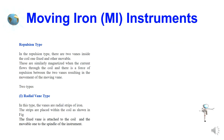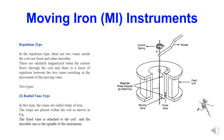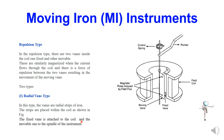Now moving to the repulsion type moving iron instruments. In repulsion type, there are two vanes inside the coil — one is fixed and another one is movable. This is called a fixed coil and this is the movable one. One vane is connected in the fixed coil and another vane is connected to the movable spindle. Here they use spring control. There is a pointer and a scale. The vanes are radial strips of iron placed within the coil. The fixed vane is attached to the coil and the movable one to the spindle of the instrument. Whenever a current is flowing, the difference of flux between the two vanes causes deflection of the pointer.